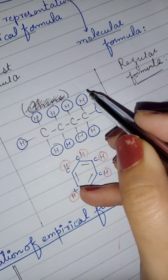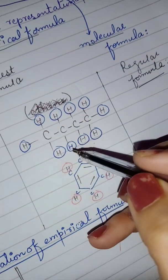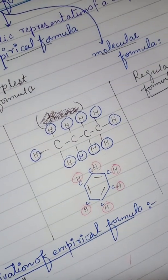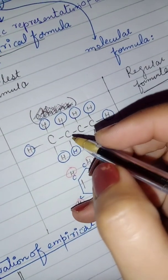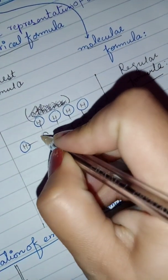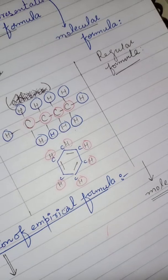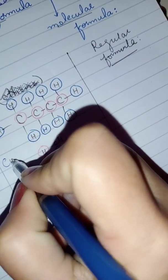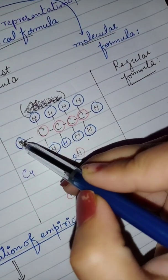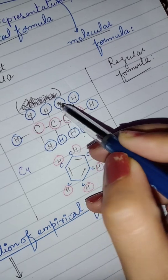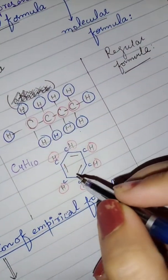For example, you can see on your screens this structure — it's an organic compound where you can see carbons and hydrogens attached. If I ask you to count the carbons: carbon 1, carbon 2, carbon 3, carbon 4 — so we have C4. And counting the hydrogens: H1 through H10 — so we have H10.